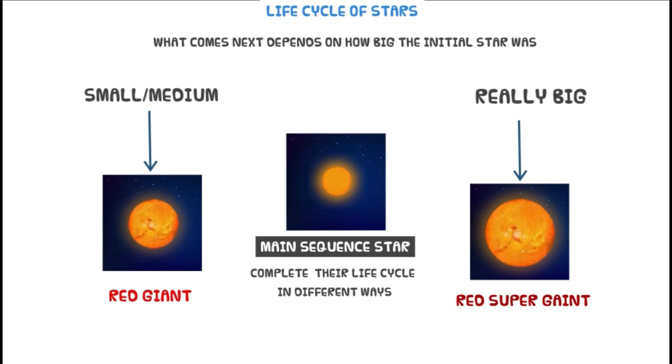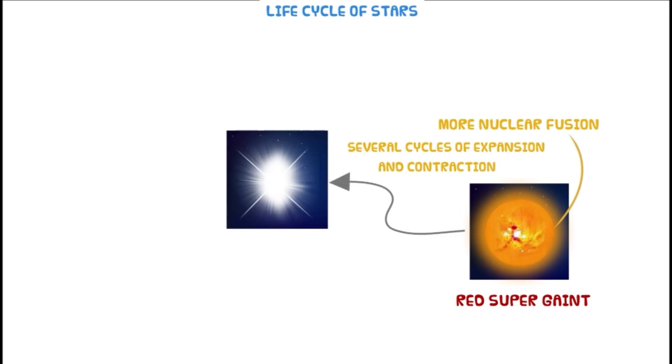For a really big star, the life cycle is a little different. The really big star forms a red supergiant and for more nuclear fusion, it contracts and compresses many times.